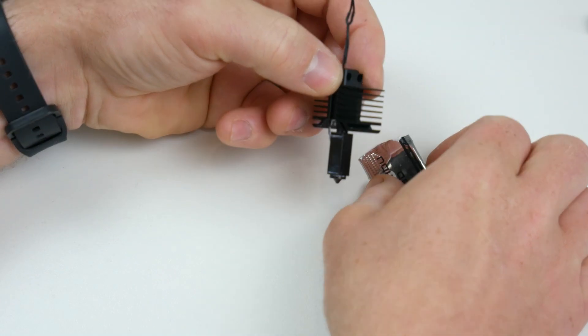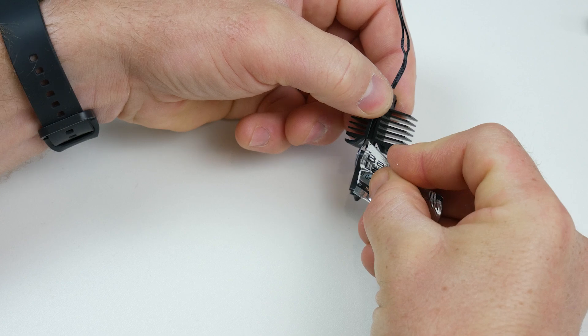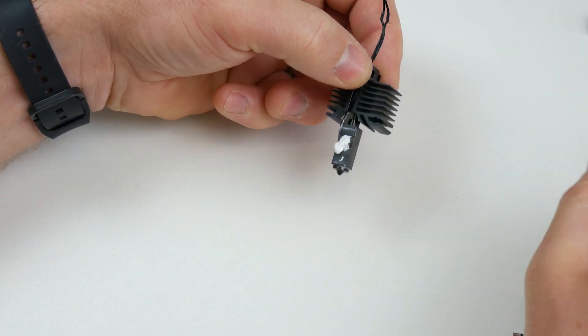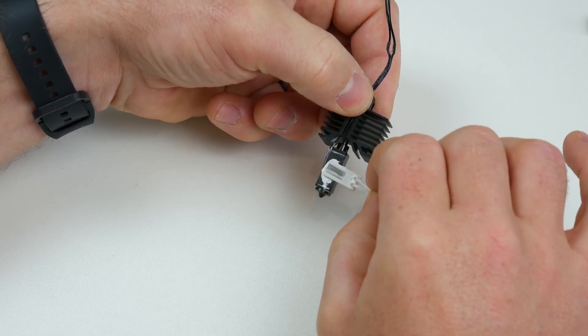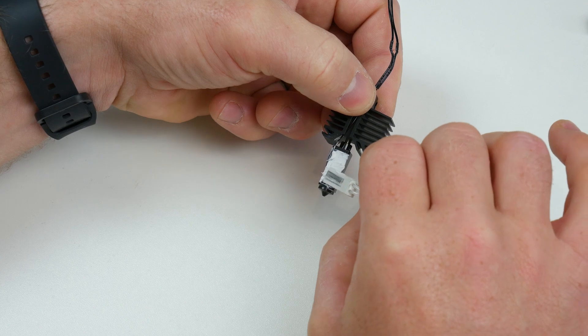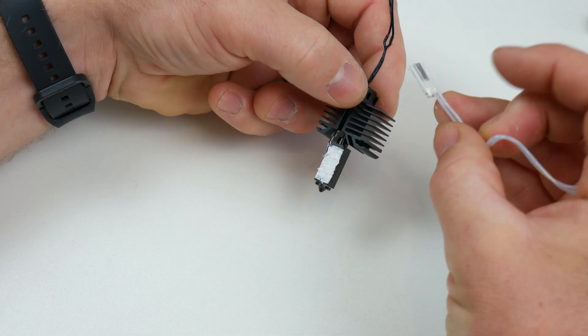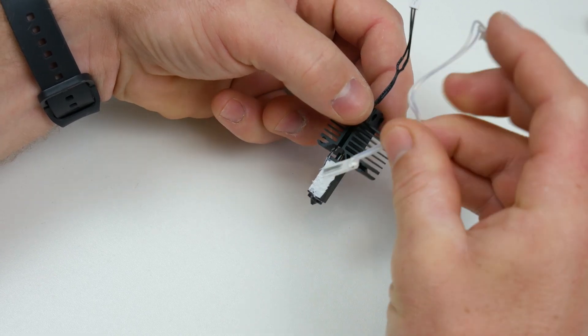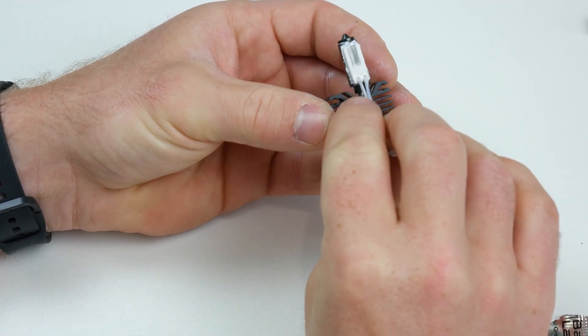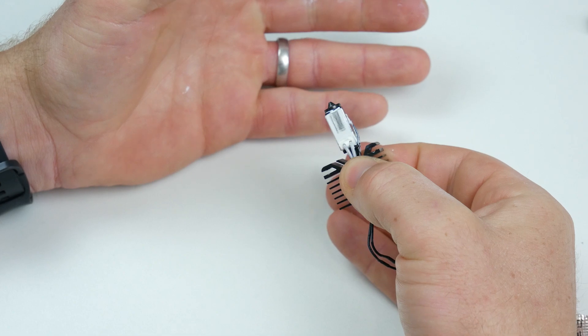Next, we're going to make sure that there's plenty of heat sink compound on the area where the heating element contacts the heater block. Make sure we've got plenty on the underside of the heater as well, and then we just need to make sure that the two mate correctly, like suchly.